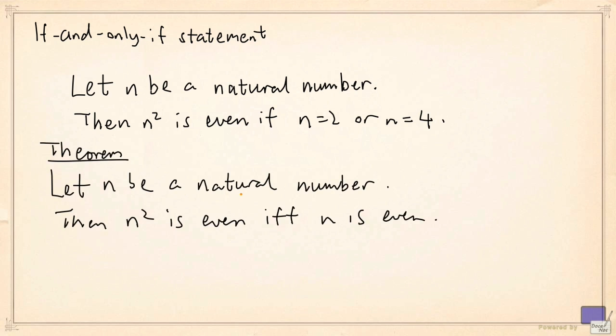Let n be a natural number, then n squared is even if and only if n is even. See if you can write down a complete proof for this. Good luck.